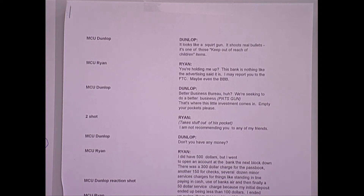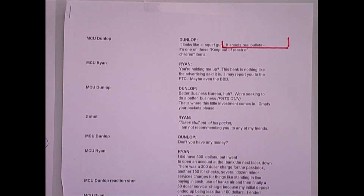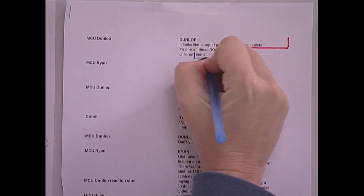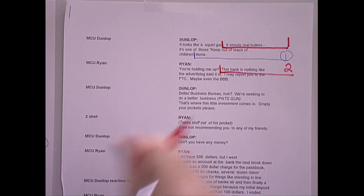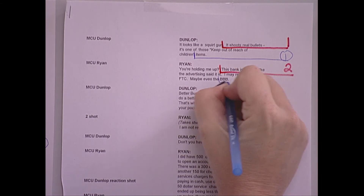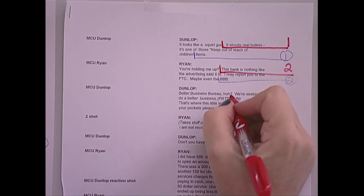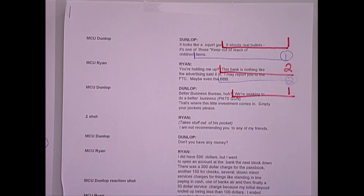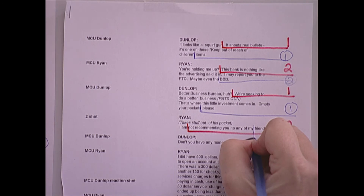Moving on to the second page. Dunlop says it looks like a squirt gun. We have to ready 1 to go back to Ryan. Between squirt and gun, ready 1, and between children and items, take 1. Ryan says you're holding me up. Between up and this, ready 2, and between the and BBB, take 2. Better business bureau — we're seeking to do a better business. Ready 1, and between pockets and please, take 1. Ryan takes stuff out of his pocket so we hold a little longer. Ready 2, and between my and friends, take 2.